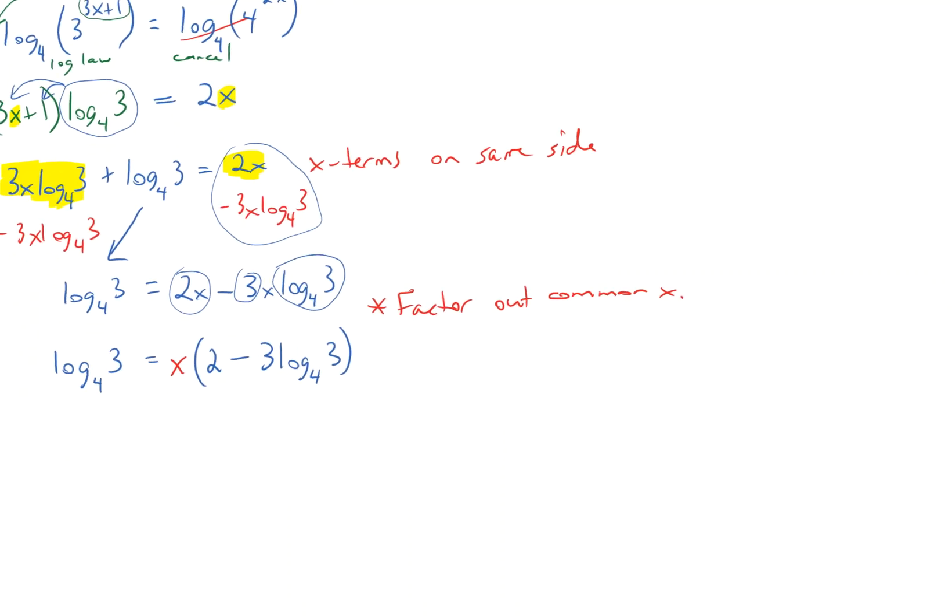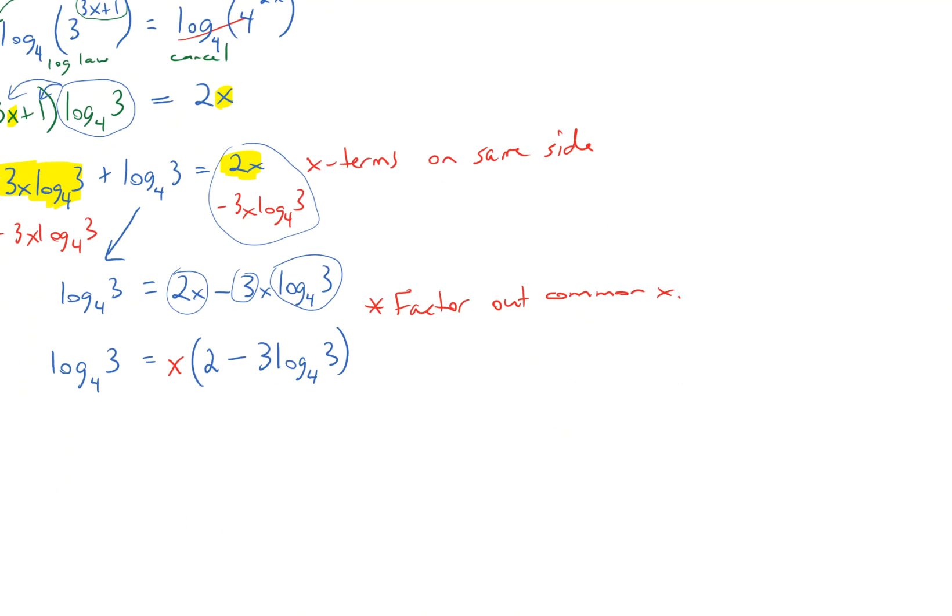So, now, to get x by itself, all I have to do is divide, because x is being multiplied by all this, I just divide by what's in the parentheses. So, 2 minus 3 times log base 4 of 3. And I have to do that on the other side to keep it balanced. And so, these guys cancel, and so I've got x equals log base 4 of 3 over 2 minus 3 times log base 4 of 3. And that's my answer.